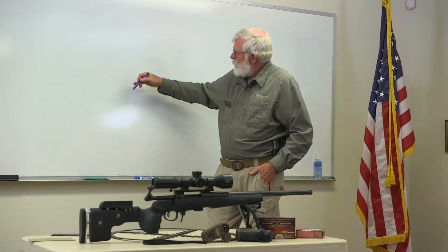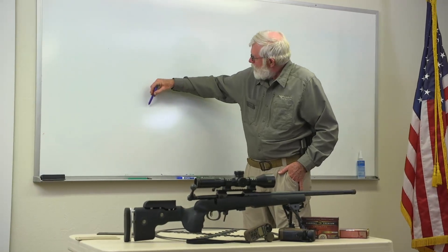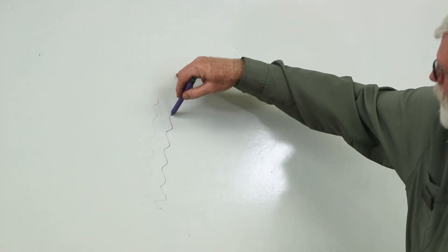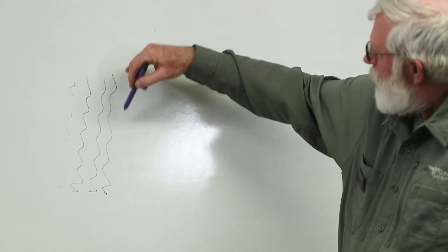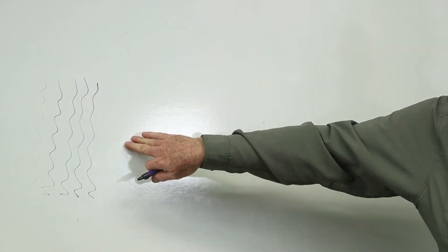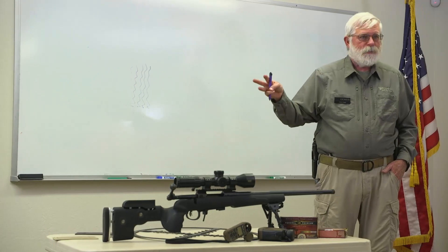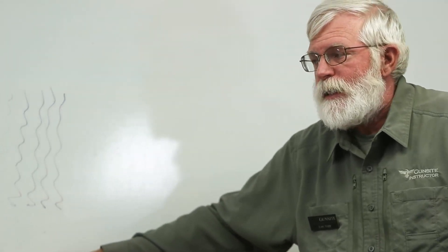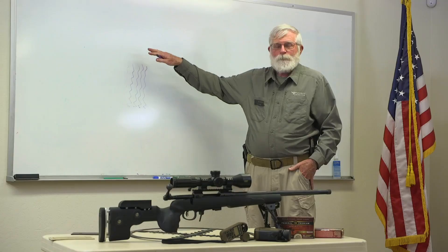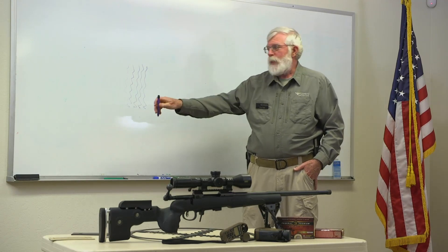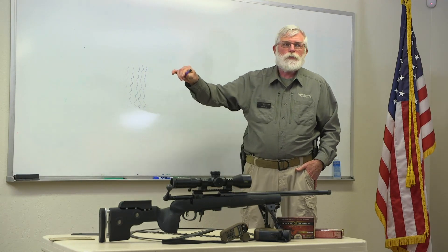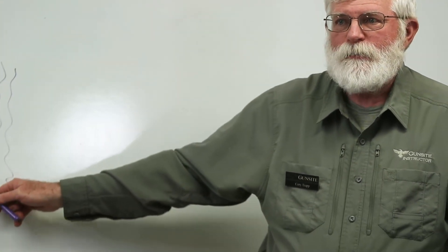If the mirage in your spotting scope shows little squiggly lines going straight up, what you have is wind doing one of three possible things: either there's no real wind and the heat is just rising straight up, or the wind is moving directly away from or directly toward your position — it's not a crosswind value at the point you have in focus.